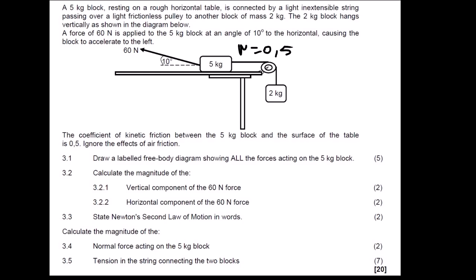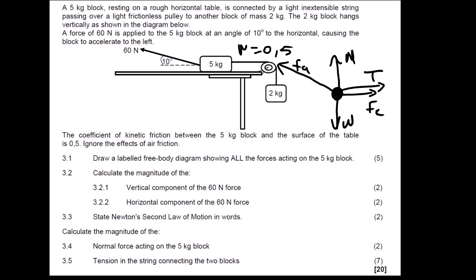The first question, 3.1: draw a labeled free body diagram showing all the forces acting on the 5 kg block. We can quickly draw it here. The mark allocation is 5 marks, so it means we have 5 forces acting on this block: weight, normal force, kinetic friction, tension, and our applied force. There is a lesson video where we look at free body diagrams for different types of scenarios — it's very important to watch it to be covered in this type of question.